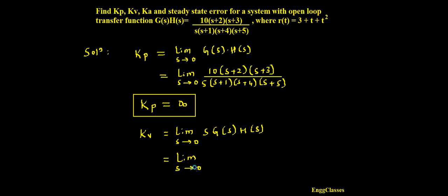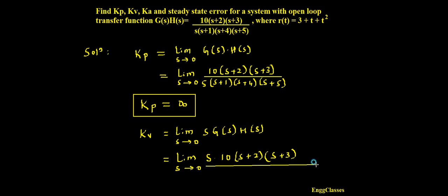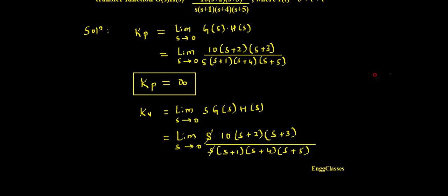Limit s tends to 0, s into G(s)H(s), the open loop transfer function. Substituting: 10(s+2)(s+3) divided by s(s+1)(s+4)(s+5). I can cancel out the s terms — there is one s in the numerator and one s in the denominator, both cancel out. Then let me substitute s equal to 0.